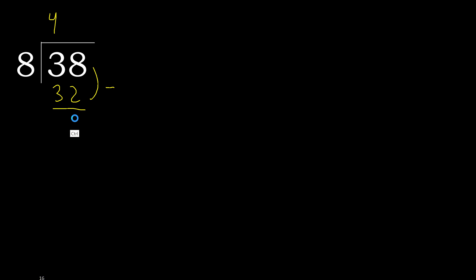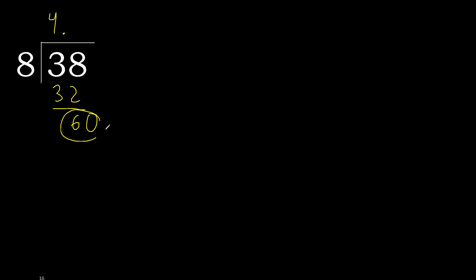Subtract. There is no next number, therefore always complete with 0. Here, with the decimal point: 0 point. This gives us 60.